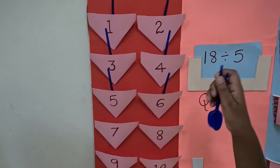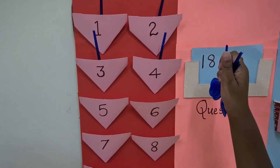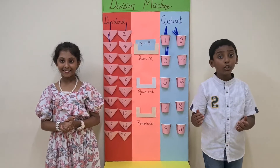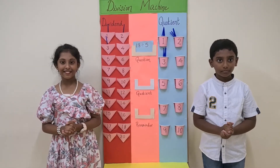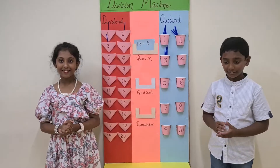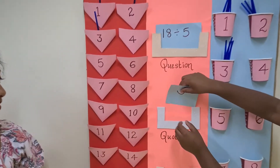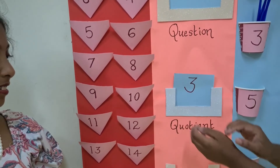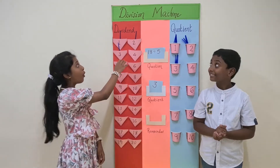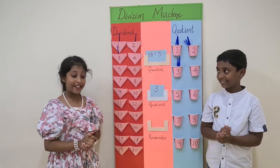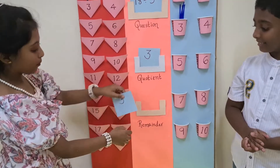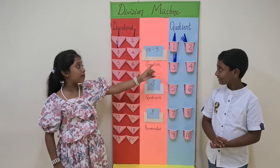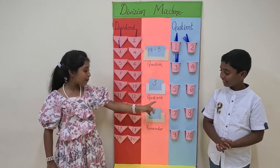1, 2, 3, 4, 5. Third group. Now we have 3 groups of 5 in the quotient pouch, so the quotient will be 3. We have 3 more in the dividend pouches, so the remainder is 3. Our final answer is 18 divided by 5 is equal to quotient 3 and remainder 3.